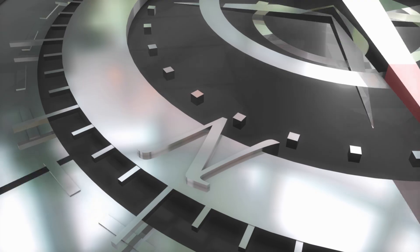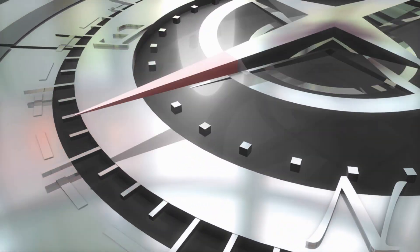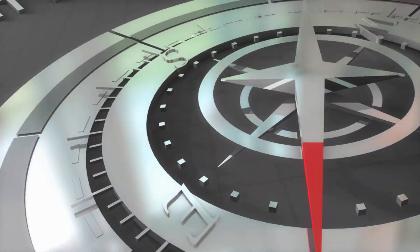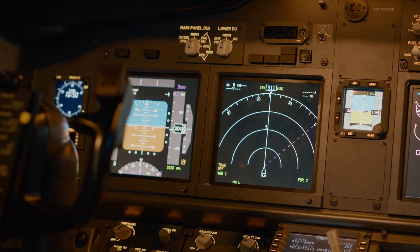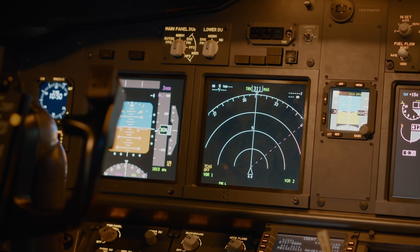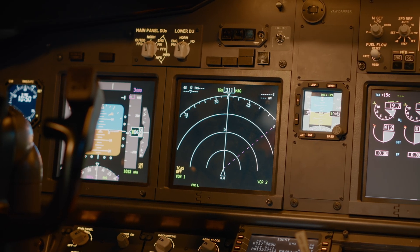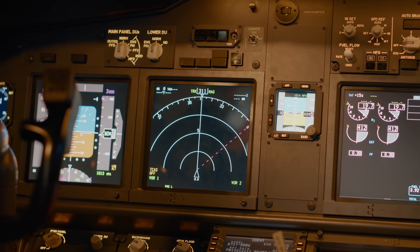Modern compasses come in all shapes and sizes, from tiny keychain versions to sophisticated electronic devices with built-in GPS. But at their core, they all rely on the same simple principle: magnetism. It's the universal force that's been guiding us for centuries.